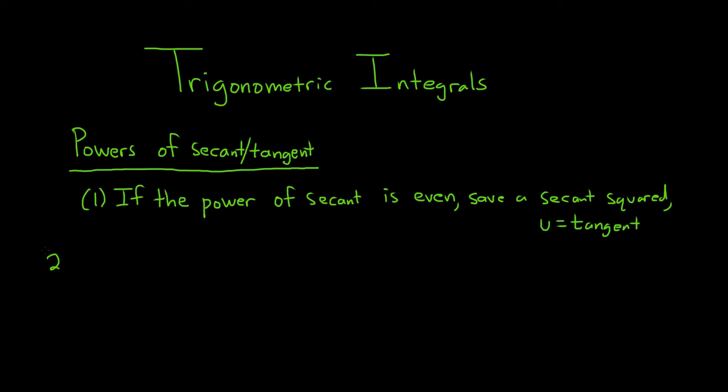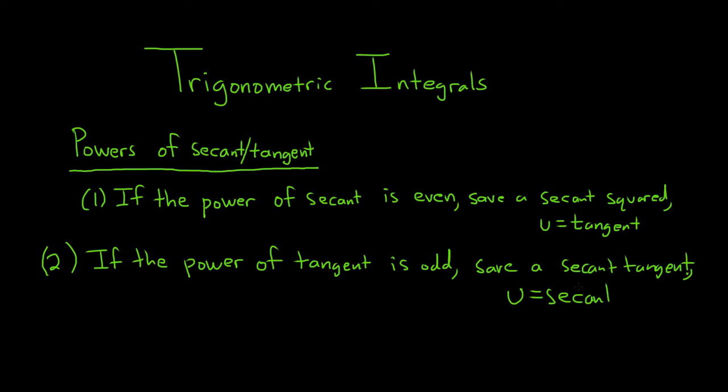If the power of tangent is odd, you want to save a secant tangent, and then you let u equal secant. Even secant, save a secant squared. Odd tangent, save a secant tangent. These are the two most common cases that you typically see, like in homework problems and tests.